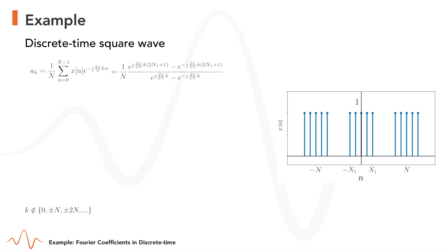As mentioned, we applied these tricks so that in the numerator and denominator we get something that resembles a sine. Using the identity e to the power of jz minus e to the power of minus jz equals sine of z times 2j, with z equal to 2 pi K times (2 capital N1 plus 1) over capital N in the numerator and z equals 2 pi over 2 capital N in the denominator, we obtain the final expression after canceling the factor 2j.